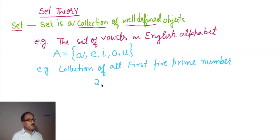7 and 11. When we put these all five prime numbers in curly brackets, then this is known as the set, set of all first five prime numbers. Let's give another name in capital letters.